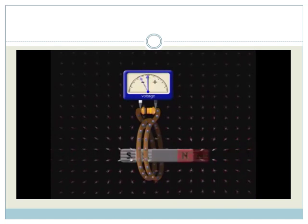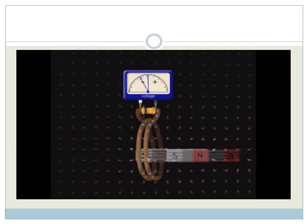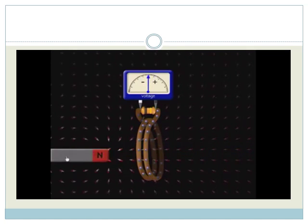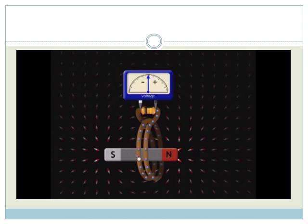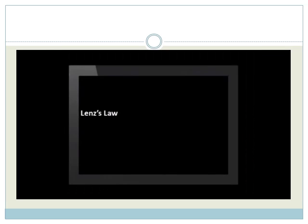When the magnet changes the magnetic field, a voltage is produced. But when it doesn't, no voltage is produced. How can we predict the direction of the current flow?